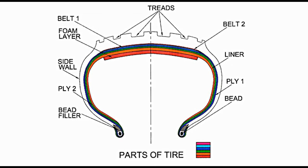Bead locks are not very popular as these make removal and mounting of the tyre difficult. Bead filler. It is made of rubber compound, wraps around the bead, and is shown in grey colour. It provides strong support to the tyre and may be noticed on the upper side of the bead.